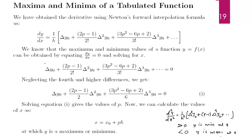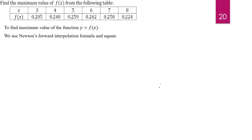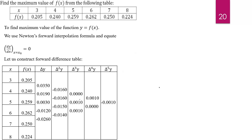Let us take the first example on this topic. The question asks: find the maximum value of f(x) from the following table. First of all, we use the Newton forward interpolation formula and consider its first order derivative, equating it to 0. We construct the forward difference table for the given data.